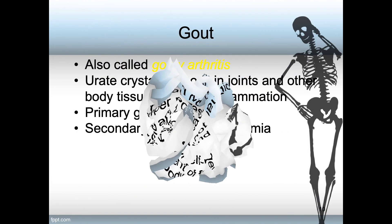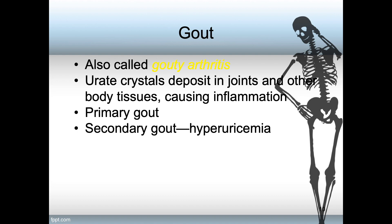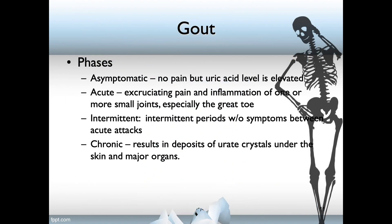We list gout here because gout is also called gouty arthritis. It is caused by urate crystals which deposit in the joints and other body tissues, causing inflammation. There is primary gout — the most common type — caused by an error in metabolism of the protein purine. Then there is secondary gout, caused by hyperuricemia that is itself caused by another problem in the body. Gout occurs in phases: asymptomatic, in which there is no pain but uric acid is elevated; and the acute phase, in which there is excruciating pain and inflammation of one or more small joints, especially the great toe.